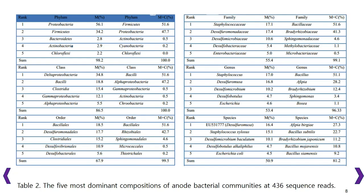This shows the 5 most dominant composition of anode bacterial communities at 426 sequence reads. 88.2% in Magnesium, 96.9% in Magnesium and Chitin, 99.2% in graphite, and 99.5% in graphite and Chitin were classified into domain bacteria. Bacterial composition and diversity were compared at the same sequence rate for a fair comparison.